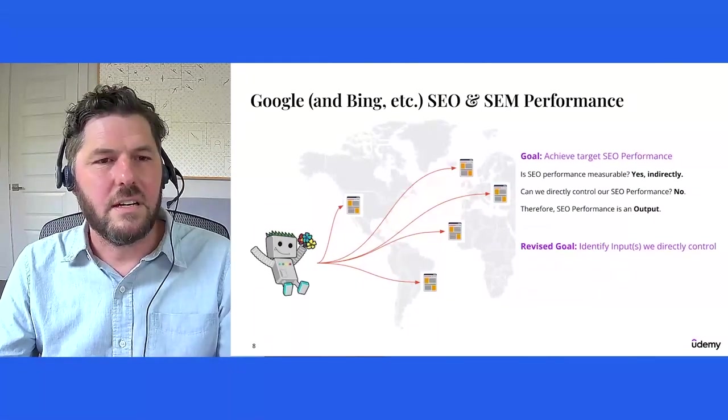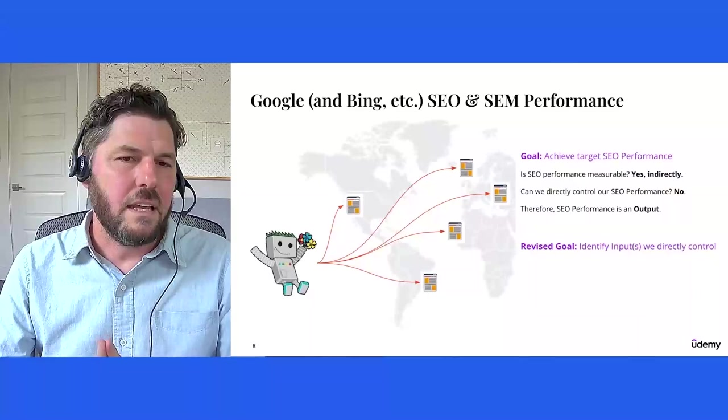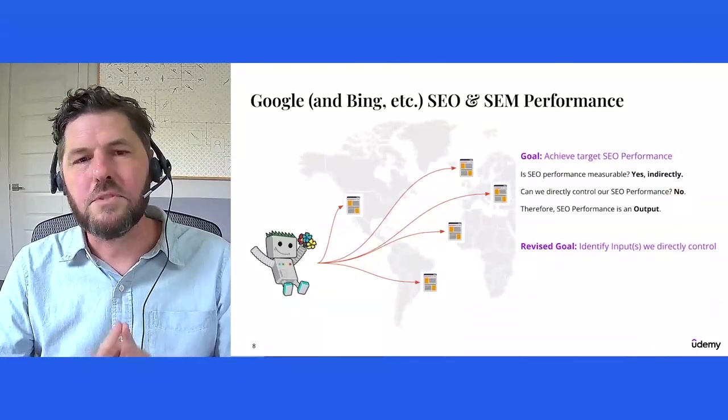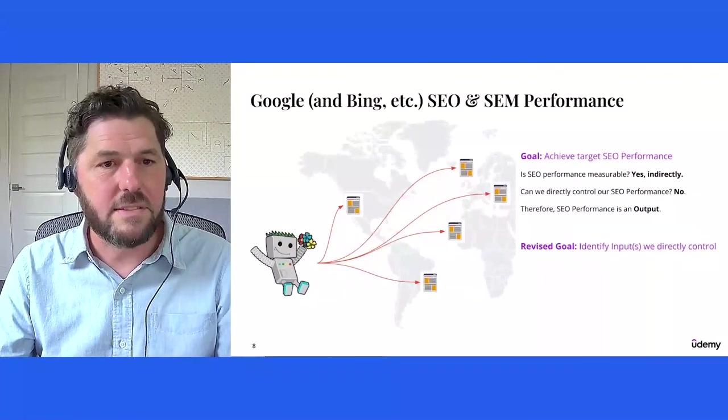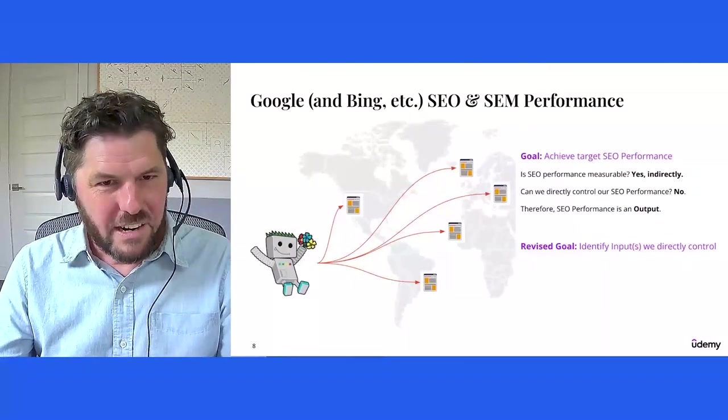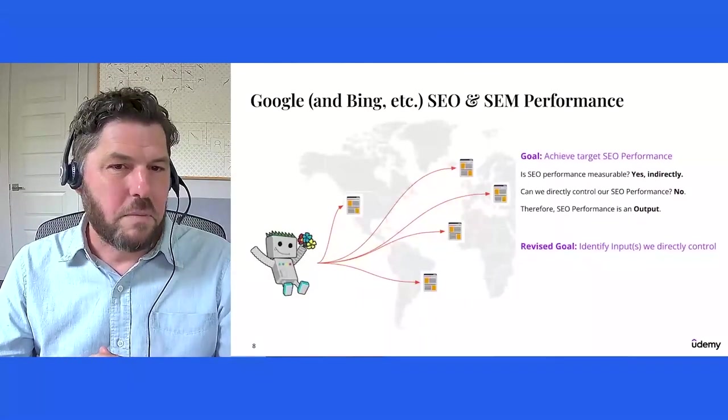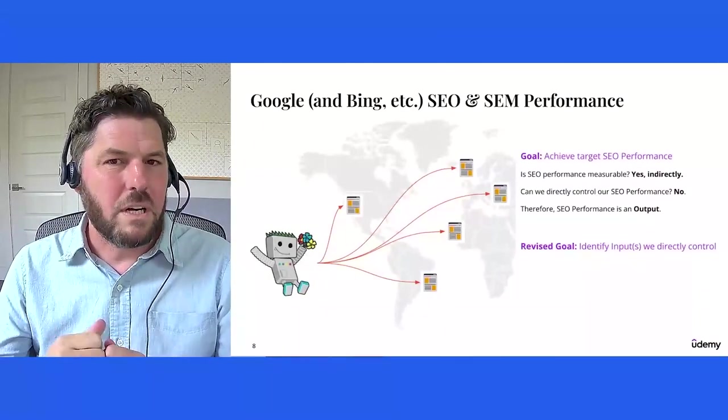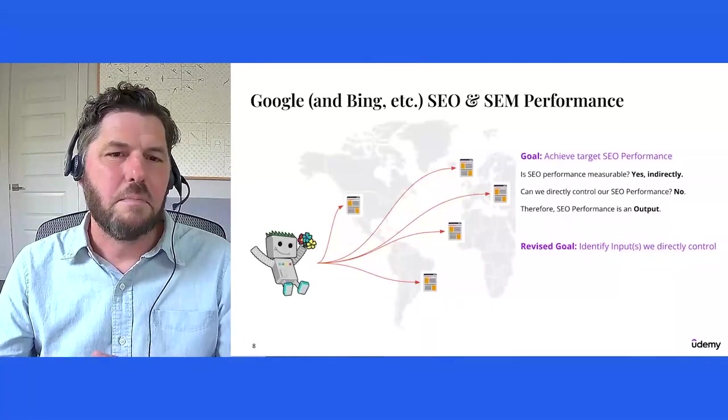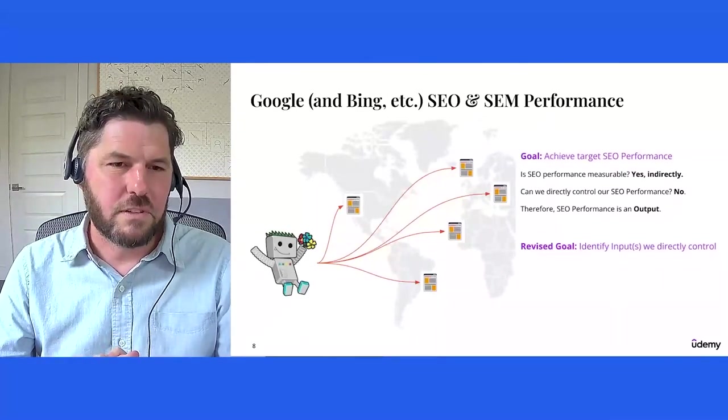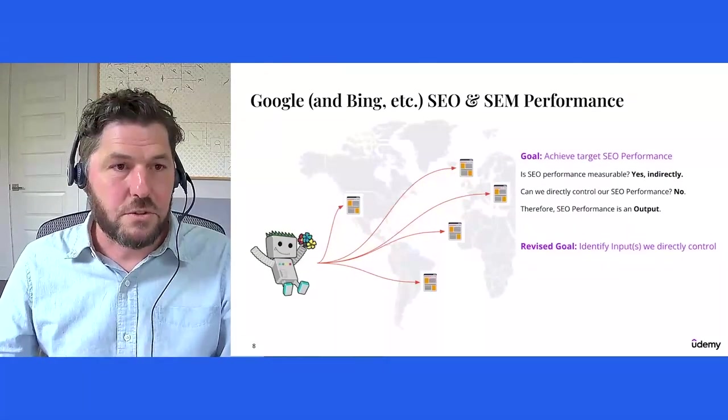And so at Udemy, we oftentimes have goals effectively to achieve target SEO performance. And this could be just in terms of growth of the business. It can also be in response to algo changes that Google and Bing and others are shipping. So we can ask ourselves, is SEO performance measurable? It is, albeit indirectly. We can measure it by observing how our site is performing in search results for head queries. Can we directly control our SEO performance? No, not at all. Therefore, SEO performance is an output. It's something that we want to influence or improve in a positive direction. But we have no direct control over how we rank.